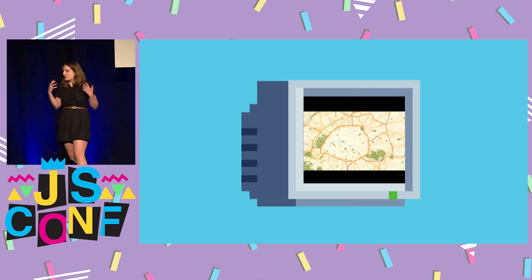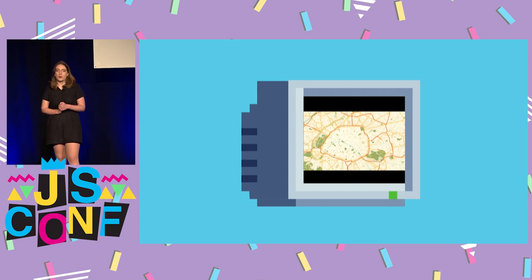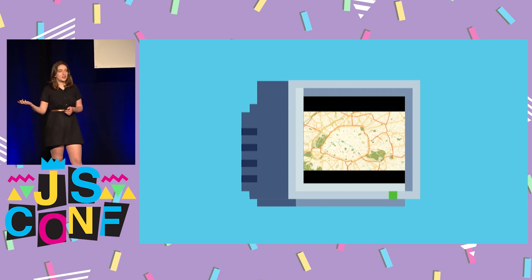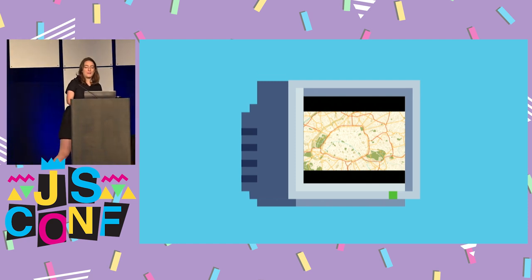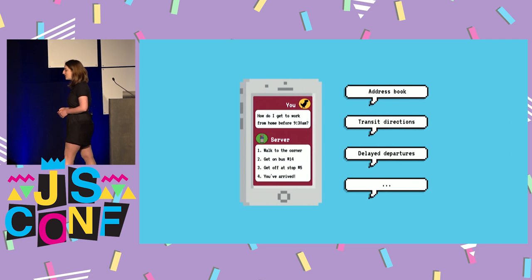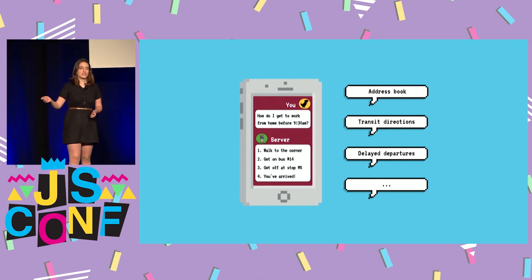I get lost even in New York City and end up in situations in Paris where I'll walk an hour in one direction and have to figure out how to take the subway back. I could download an offline map, but when I want to take the subway that requires up-to-date real-time information you can't get offline. And I noticed that my phone plan has unlimited SMS in most countries, or very cheap messaging.